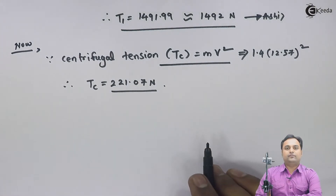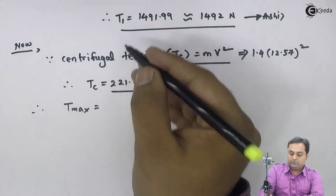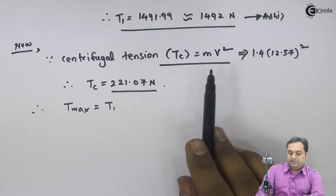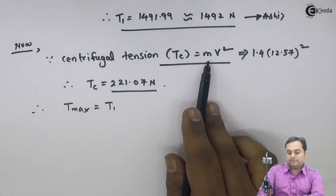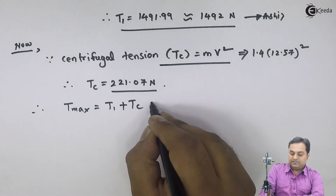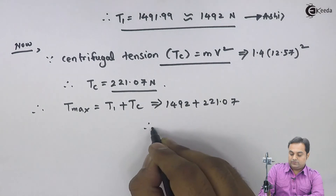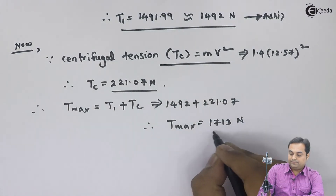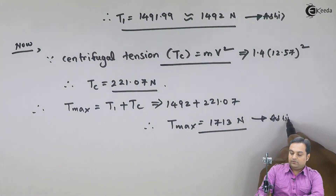Now to find maximum tension: if mass had not been given, we would not have calculated centrifugal tension, and maximum tension would simply be t1. But since mass is given and centrifugal tension has been calculated, maximum tension T_max = t1 + tc = 1492 + 221.07, therefore T_max = 1713 newton.